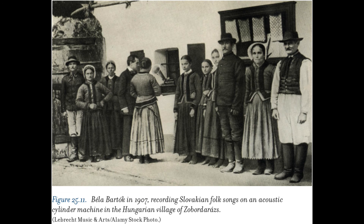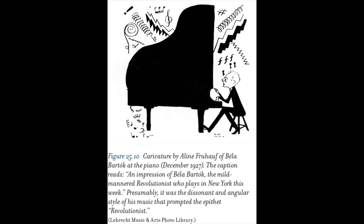Béla Bartók (1881–1945) studied piano and composition in Budapest. A virtuoso pianist, he performed all over Europe and edited keyboard music by Bach, Haydn, Mozart, and others. As an ethnomusicologist, he collected, edited, published, and wrote about folk music. He composed his most famous pieces shortly before World War II, and in 1940 immigrated to the United States, settling in New York. Bartók created an individual modernist idiom by synthesizing elements of Hungarian, Romanian, and Bulgarian peasant music with the classical tradition. His search for an innately Hungarian music led him to collect and study peasant music, often with fellow composer Zoltán Kodály (1882–1967). He arranged peasant tunes, created original works based on them, and blended peasant tune characteristics with those of classical and modern music.